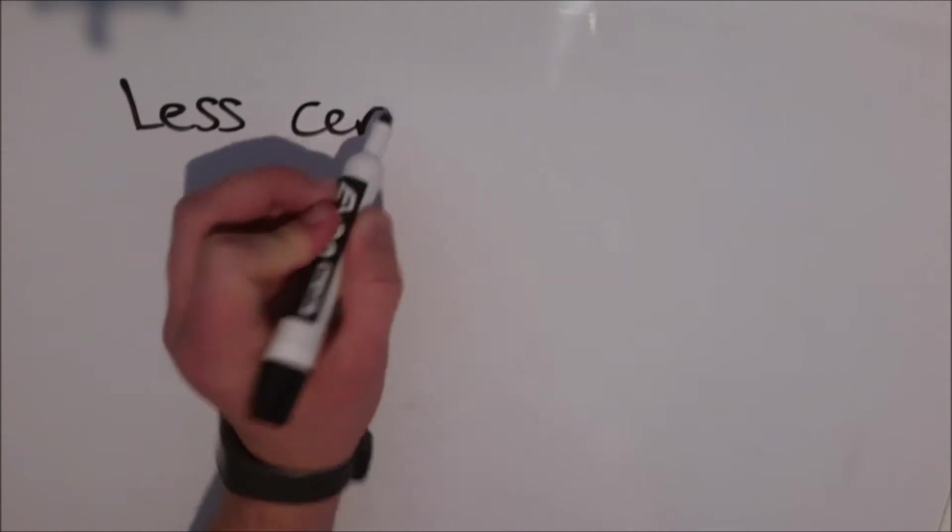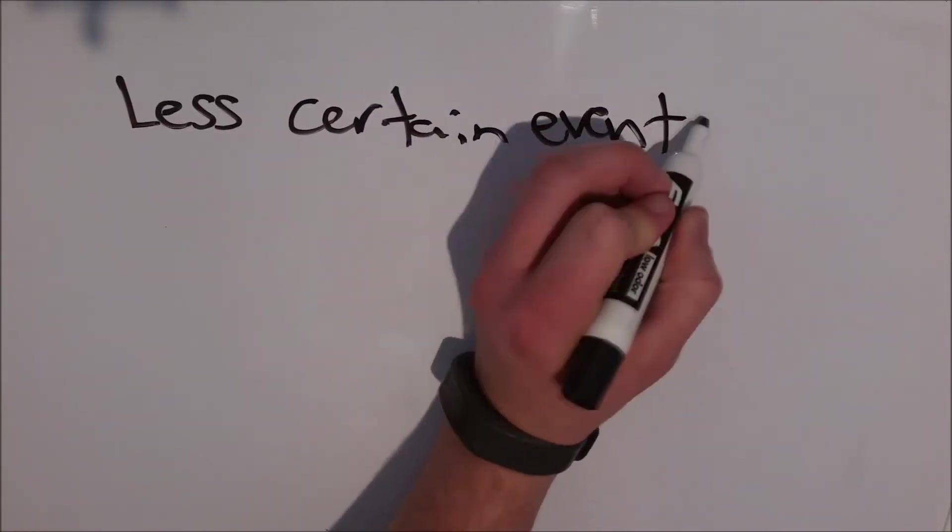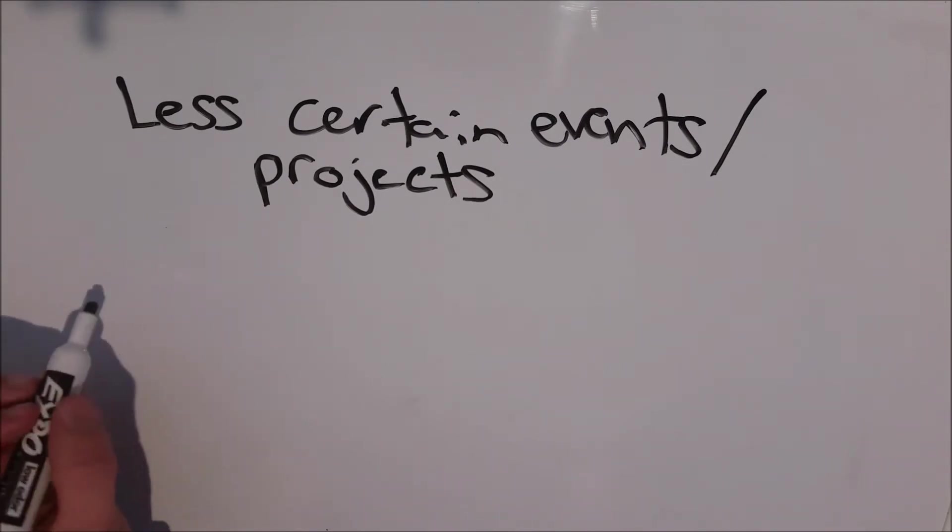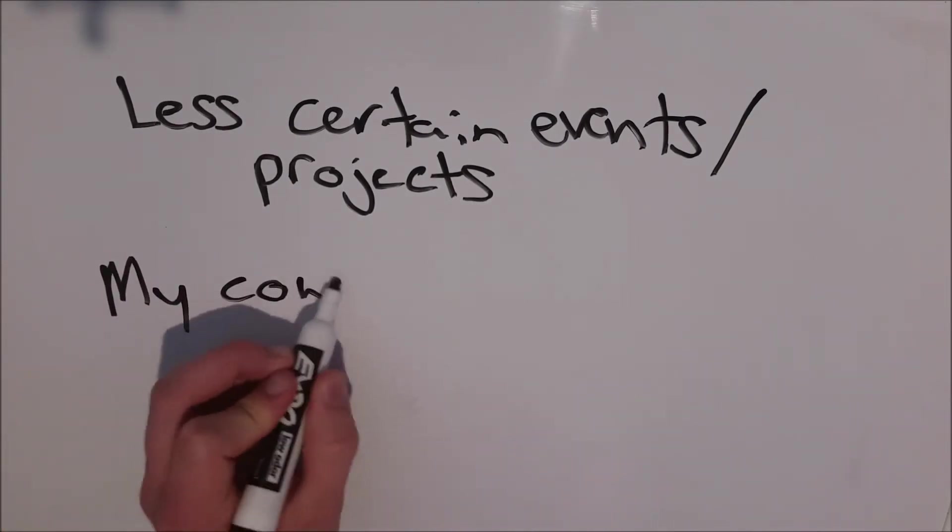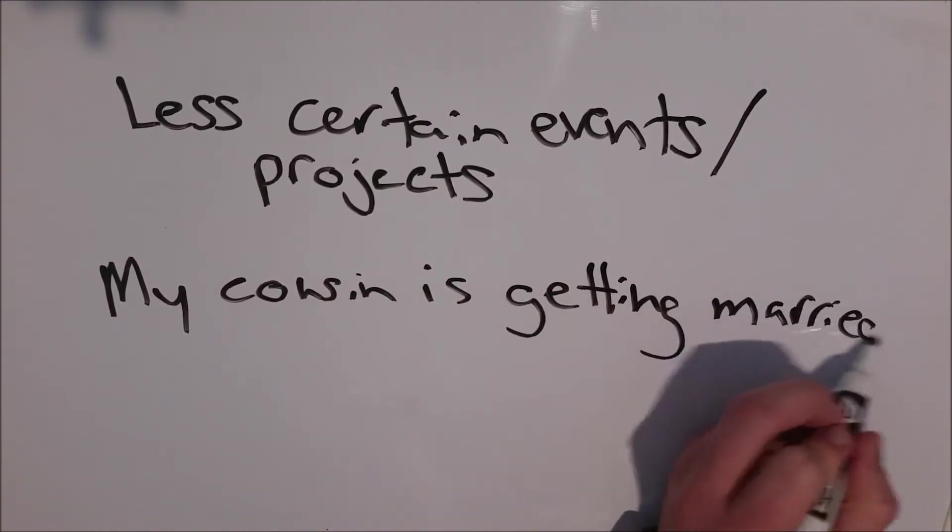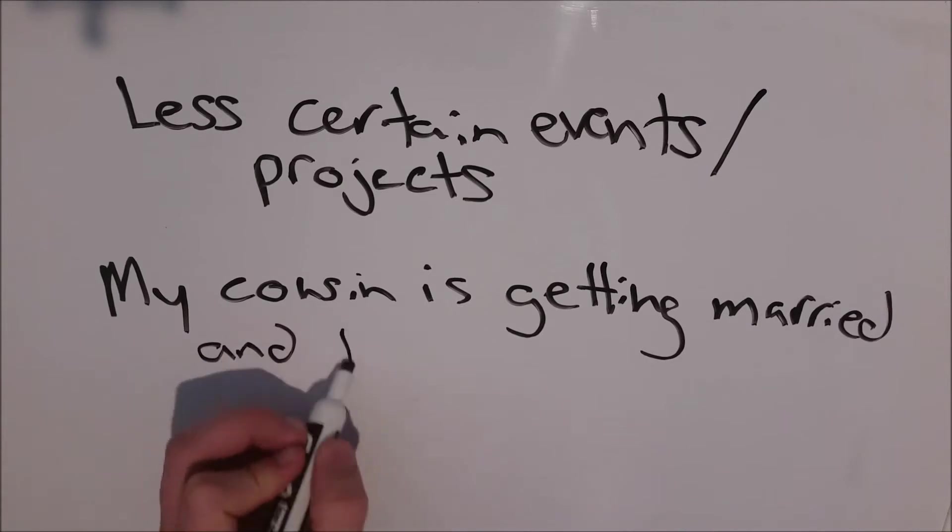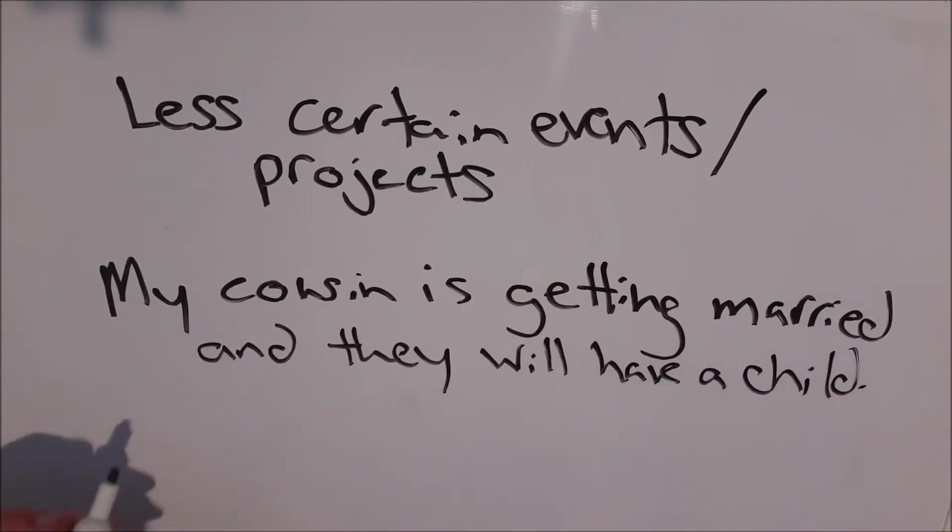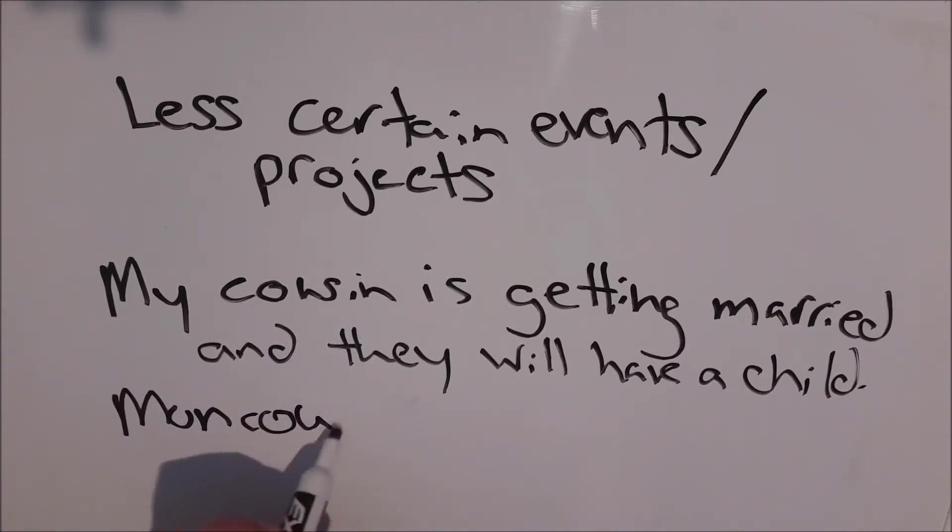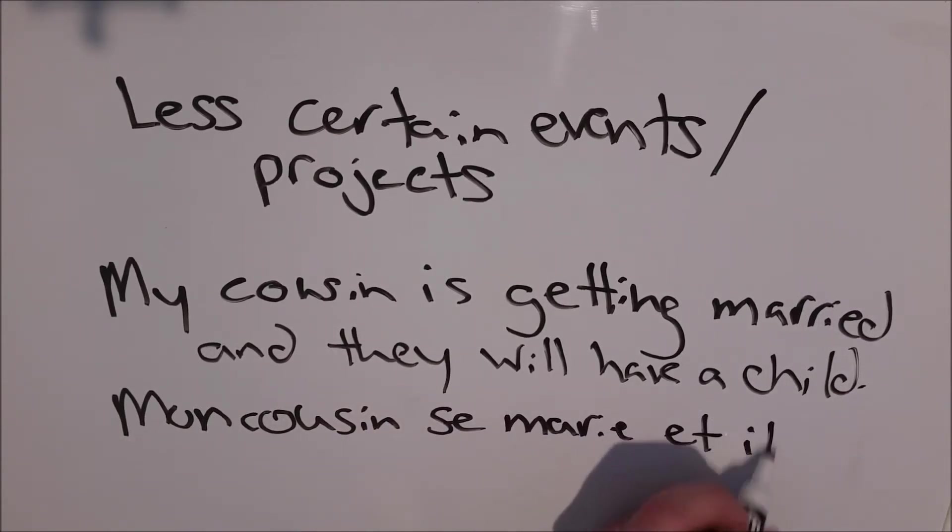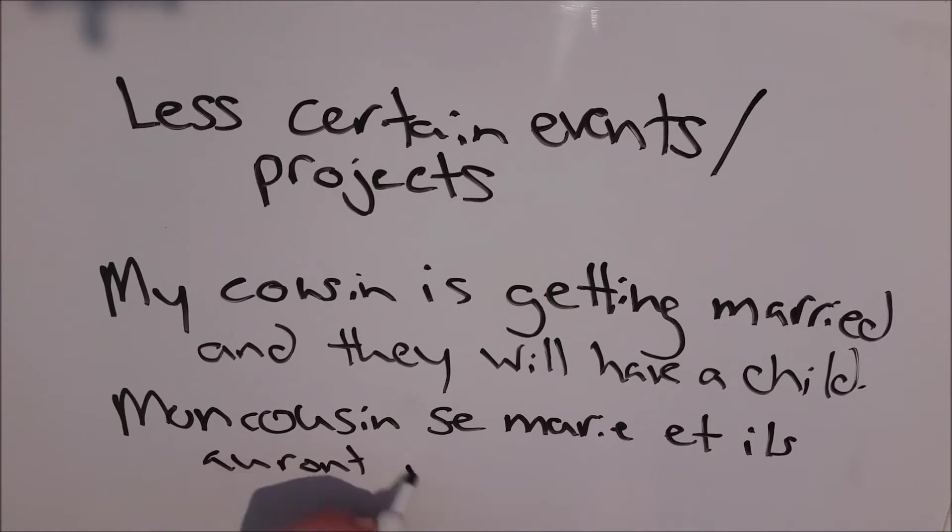So now, you may know that there are two future tenses in French. The future simple is used for less certain events, projects, or plans. So let's take this sentence for example. My cousin is getting married, and they will have a baby. This is less certain, no one's pregnant necessarily at this moment. So you have the sentence, mon cousin se marie, et ils auront un bébé.